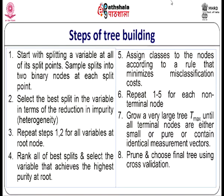To construct a tree: selection of splits is important; you must decide when a node becomes a terminal node; and you must assign a class to each terminal node. The steps of tree building: start by splitting a variable at all its split points — all the values it has. The sample splits into two binary nodes at each split point. Select the best split in the variable in terms of reduction in impurity. First select a variable, then select where to split it — for example, a variable ranging from 30 to 70 could be split at 40, 50, or 60.